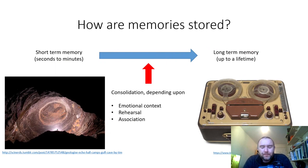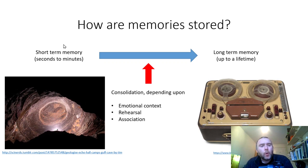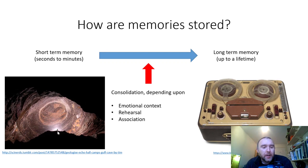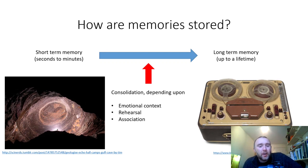How are memories stored? We need to think about two broad types regardless of content. Short-term memory lasts typically seconds to minutes, and long-term memory can last up to a lifetime. Short-term memory is like an echo in a cave — a reverberation of neural circuits storing information just long enough to decide what to do with it. To convert short-term memory to long-term memory, you need to go through a process called consolidation.